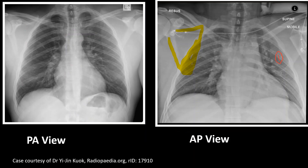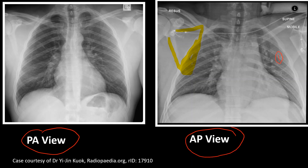Here we can see two images from the same patient: the first is the posterior-anterior view and the second is the antero-posterior view. To differentiate the AP view from the PA view, we look for the scapular margin. The scapular margins are better appreciated in the antero-posterior view than the posterior-anterior view, by which we can identify the x-ray as AP view.